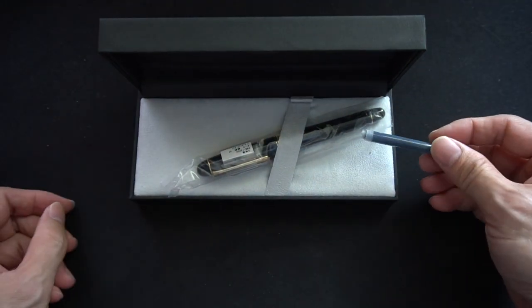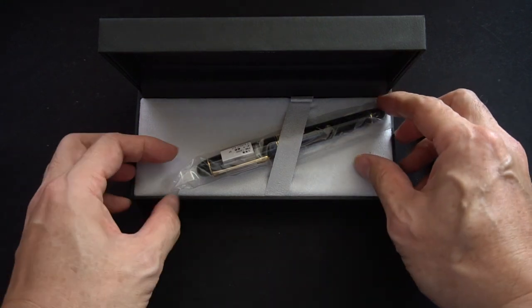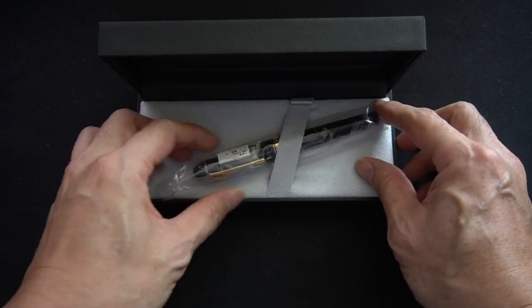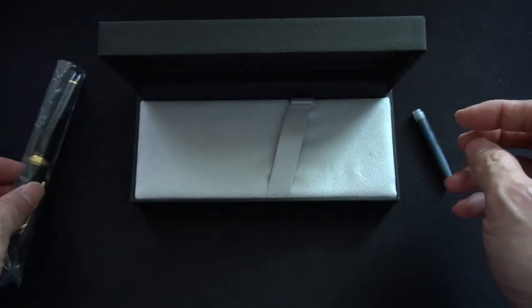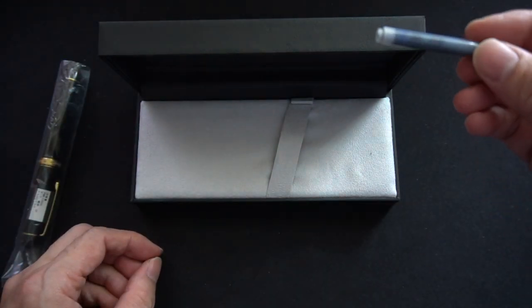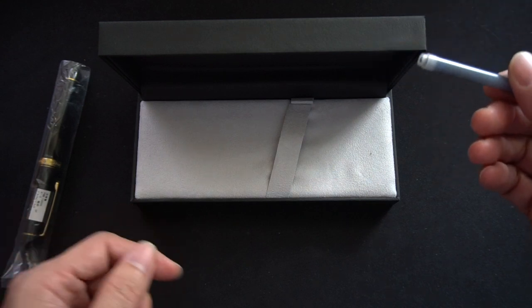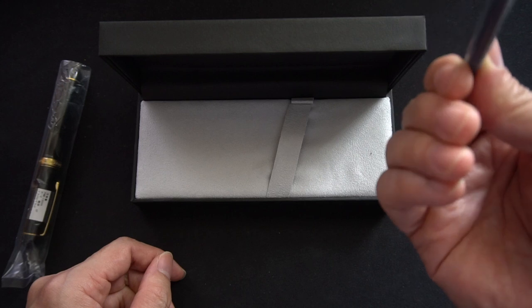And this is the pen. So as you probably would have known by looking at the video caption, it's a 3776. We'll take a look at the pen later on. You can buy it with a converter but it's pretty rare, most of the times it comes with a cartridge like this.